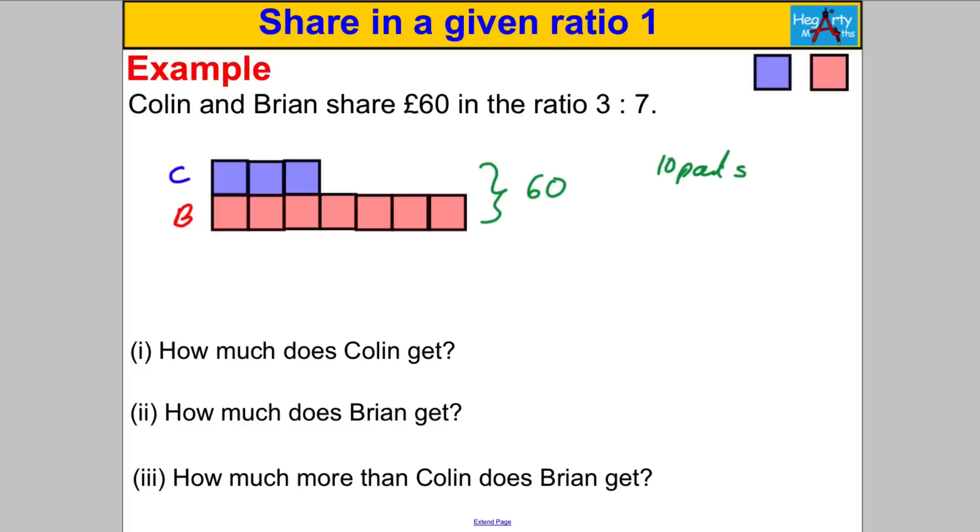How many parts do you have in total? 3 and 7 is 10, so you can state that 10 parts must be worth 60 pounds. So one part, you must divide by 10. It's 60 divided by 10, which is equal to 6. So therefore each part or each box is worth 6. Let's fill in the diagram. Put 6 in each box.